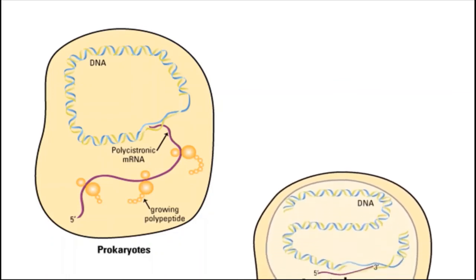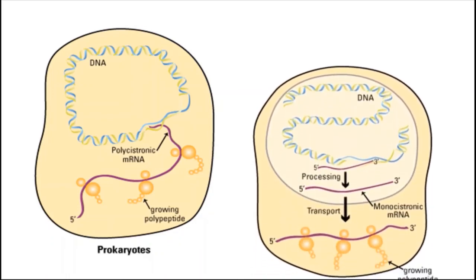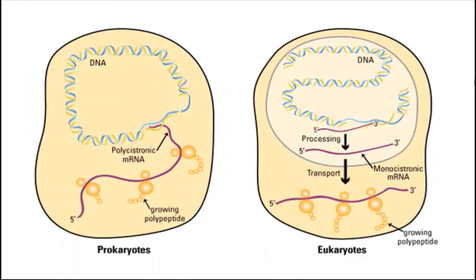But in eukaryotes, the RNA strand released is called premature RNA or hnRNA. It is not yet ready to undergo translation. It has to undergo extensive editing before being used in translation process.